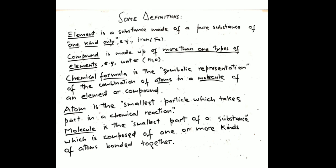These are elements and compounds. For example, H2O is the chemical formula for water — a compound. Atoms are the smallest particles that take part in chemical reactions. Molecules are the smallest part of a substance, composed of more than one atom bound together. Molecules are the smallest independent part of a substance and can be used to create a compound or element.